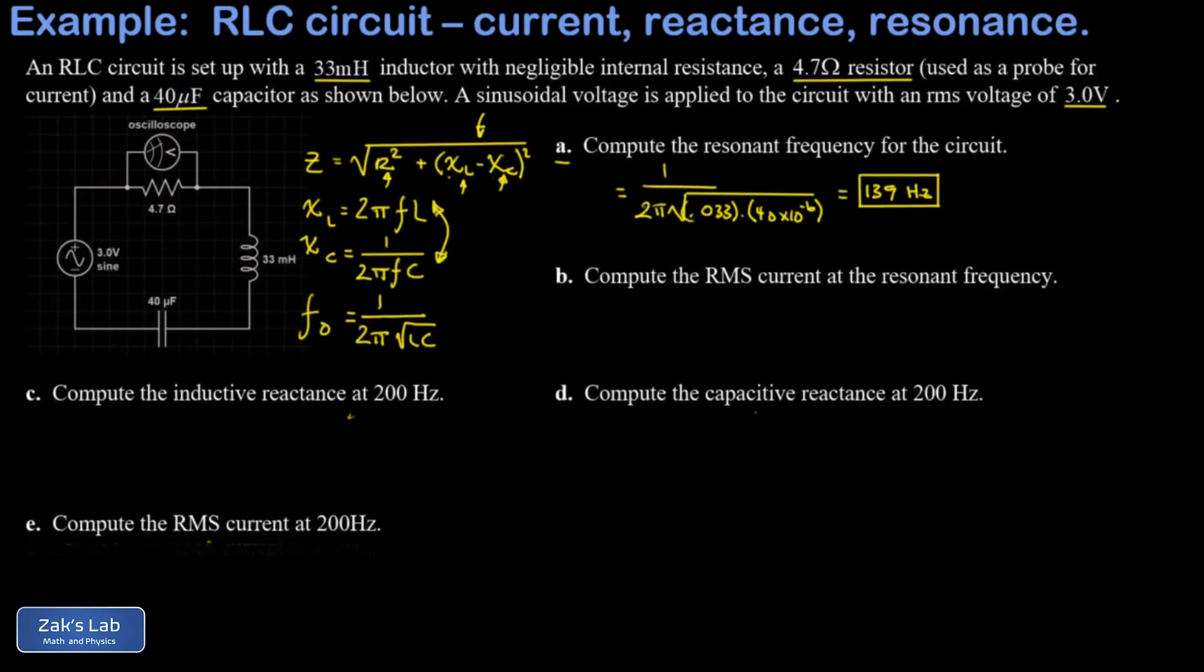In part B, I want the root mean squared or RMS current at the resonant frequency. And so the current follows a version of Ohm's law, I equals V over R. And the RMS current is given by the RMS voltage divided by the total resistance. But in an alternating current circuit, we use the total impedance. But things get simpler here because, as I said, at the resonant frequency of 139 Hertz, there's no calculation necessary to get the impedance because I know at the resonant frequency, the two reactances are equal to each other.